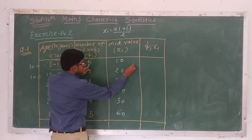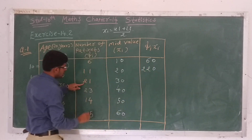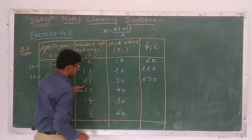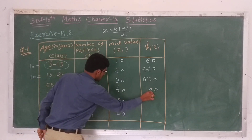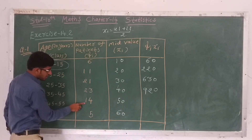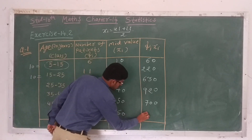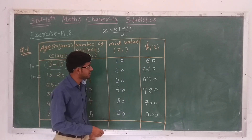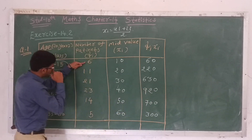So we multiply each frequency fi by its corresponding xi value to get fi·xi for each class. Then we need to find the summation of fi·xi, which is sigma fi·xi, and also the summation of frequency sigma fi.